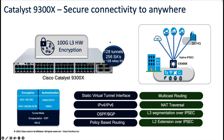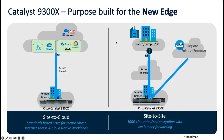One of the key use cases the Catalyst 9300X enables is secure connectivity anywhere. Leveraging 100G Layer 3 hardware encryption embedded on the ASIC itself, the Catalyst 9300X can now act as a branch edge for lean branch network requirements, ensuring secure connectivity to your data center, different public clouds, secure internet gateways, or SASE providers. The IPSec capability on 9300X is based on the IKEv2 standard and supports all the major features to interoperate with all major public cloud providers.